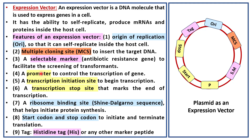An expression vector has a promoter, a transcription initiation site, a transcription stop site, a ribosome binding site, a start codon, a stop codon, and a tag. A promoter is used to control the transcription of the gene. A transcription initiation site is used to begin transcription. A transcription stop site marks the end of transcription. A ribosome binding site, or Shine-Dalgarno sequence, helps initiate protein synthesis. The start codon and stop codon initiate and terminate translation.